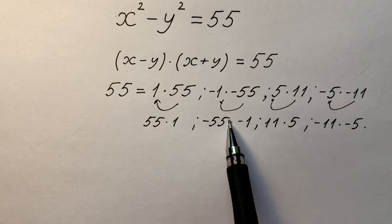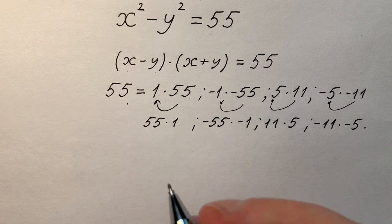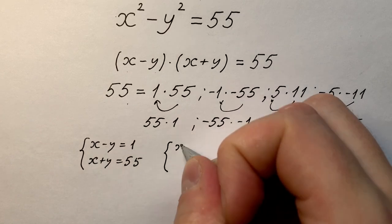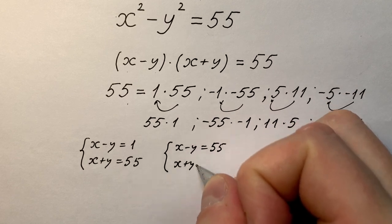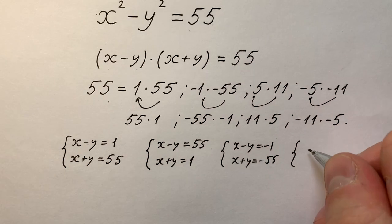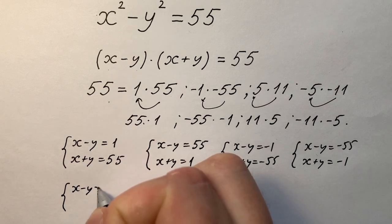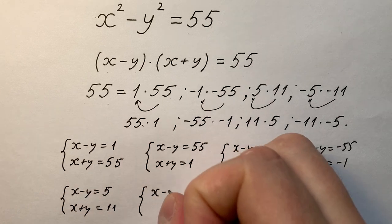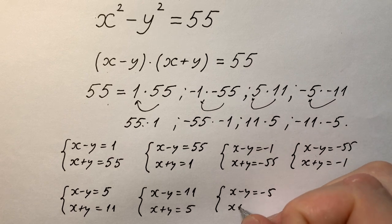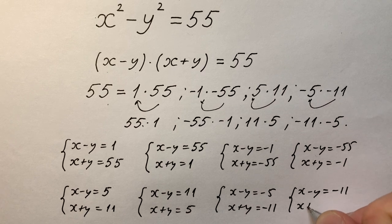And all we have eight options of product and they all give us 55. Very good. So we're going to write eight systems of equations. The first system: x - y equals 1 while x + y equals 55. Then x - y equals 55, x + y equals 1. x - y equals -1 and x + y equals -55. x - y equals -55, x + y equals -1. And another four: x - y equals 5, x + y equals 11. x - y equals 11, x + y equals 5. x - y equals -5, x + y equals -11. And the last one: x - y equals -11 and x + y equals -5.